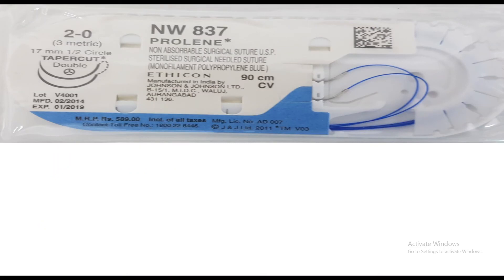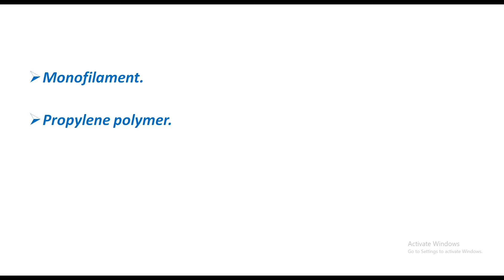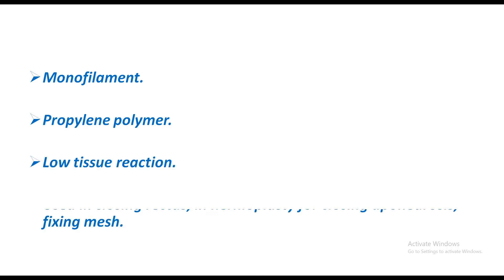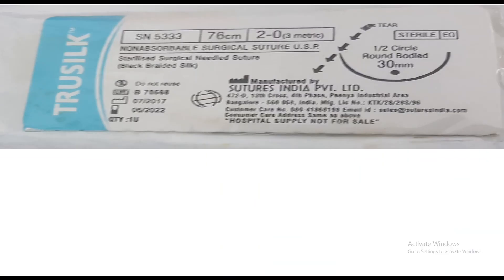Prolene is blue in color and monofilament. It is a polymer of polypropylene, causes low tissue reaction, and is used in closing rectus, hernioplasty for closing aponeurosis, and fixing mesh.